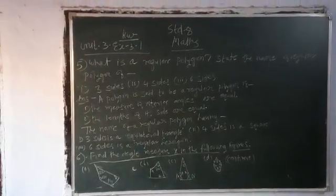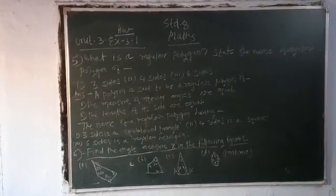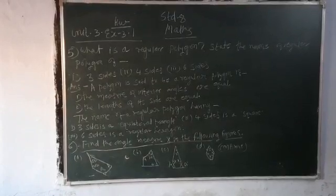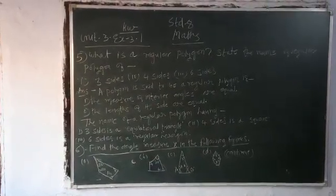Answer: A polygon is said to be a regular polygon if the measure of interior angles are equal and the length of each side are equal.